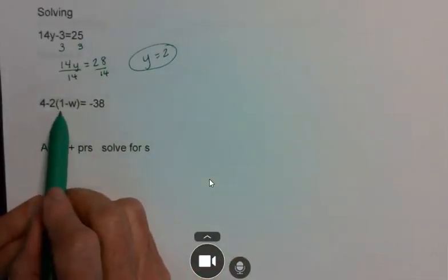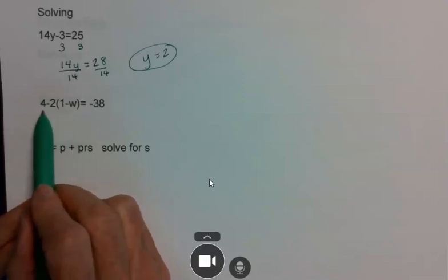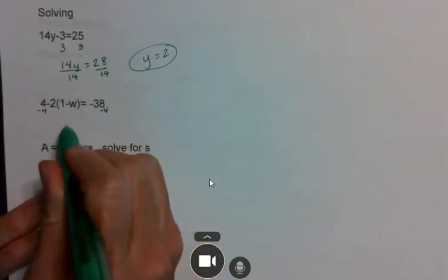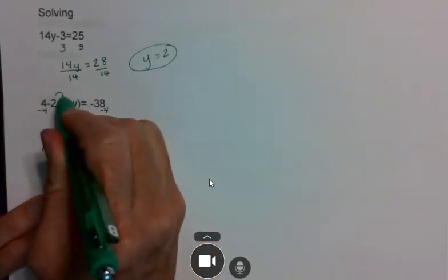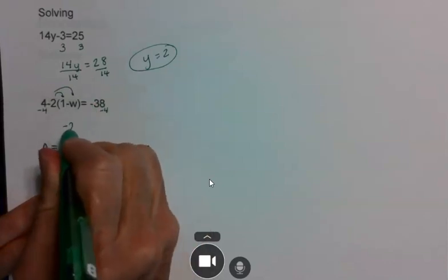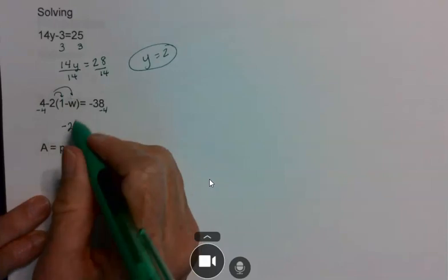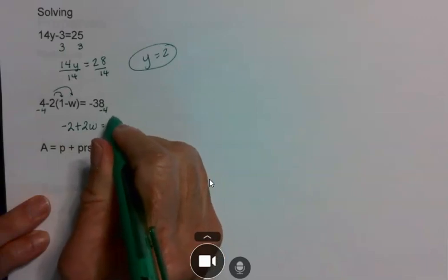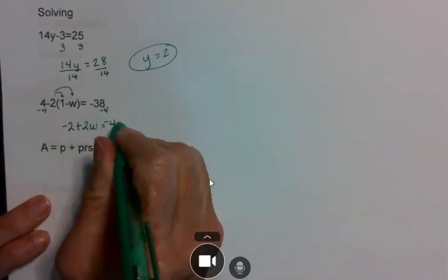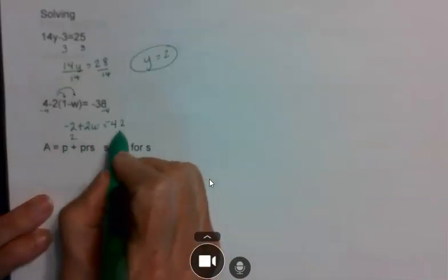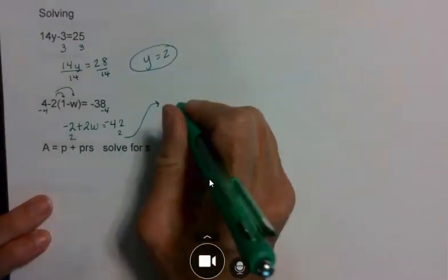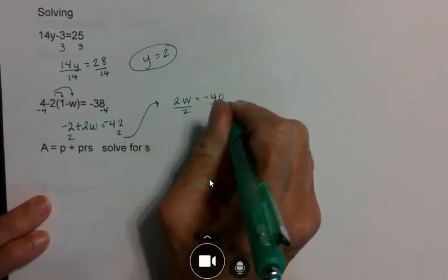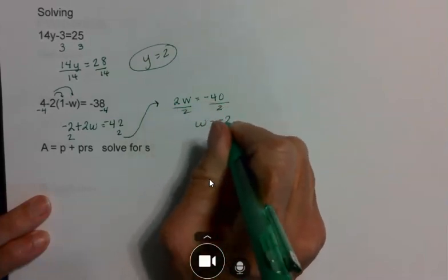Here I have 4 minus 2 times the quantity 1 minus w equals 42. I distribute first: negative 2 times 1 is negative 2, and negative 2 times negative w gives 2w. I subtract 4 from both sides, then add 2 to both sides to get 2w equals negative 40. Dividing by 2, I get w equals negative 20.